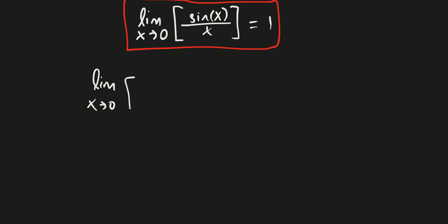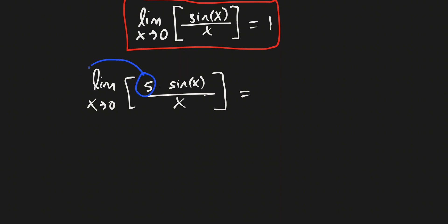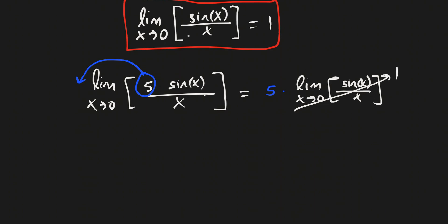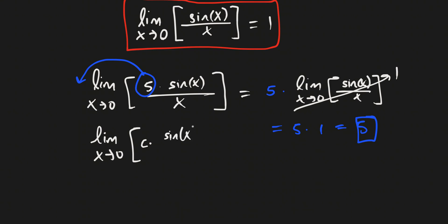If we had the limit as x approaches 0 of 5 times sine x over x, we can take the 5 and move it out. So this is just going to be 5 times the limit as x approaches 0 of sine x over x. We know that limit equals 1, so this is just 5 times 1, which equals 5. We can make this a general rule: the limit as x approaches 0 of c times sine x over x is equal to c.